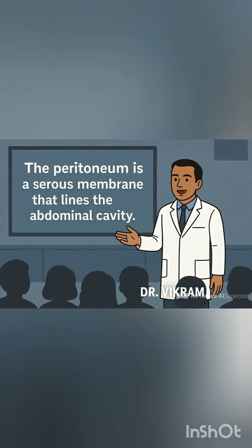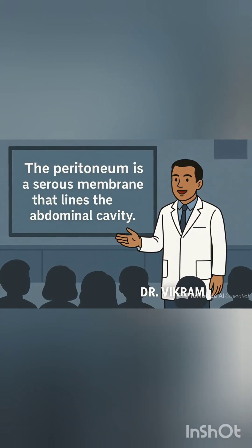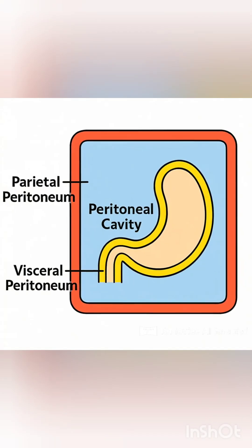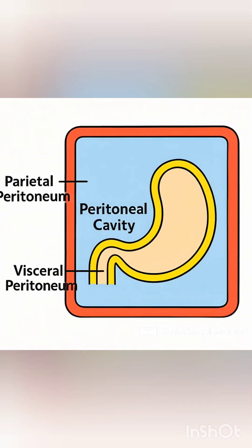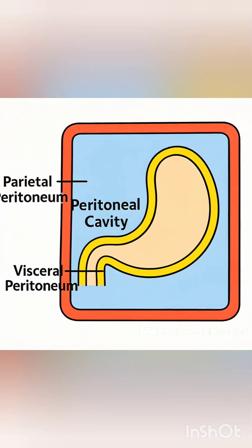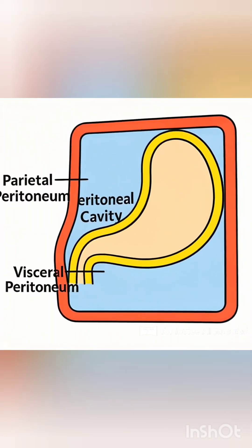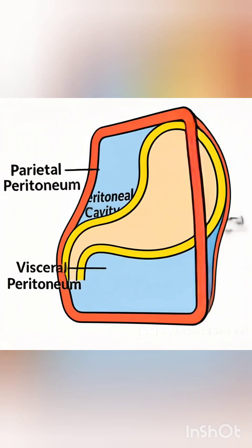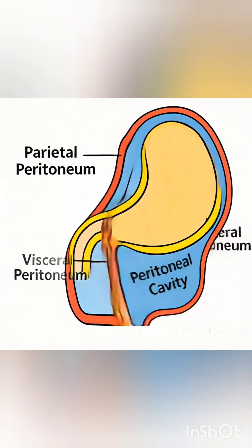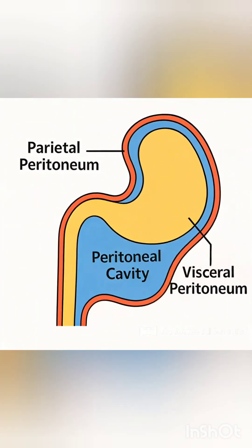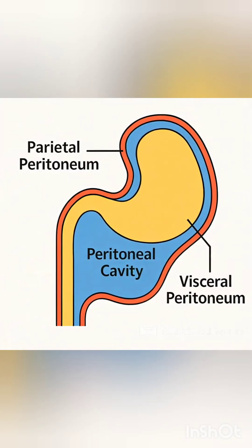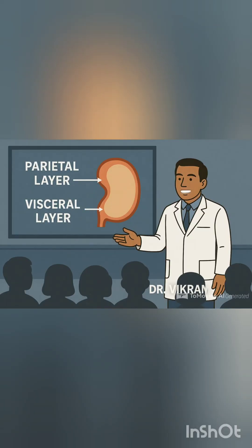Peritoneum has two layers: parietal peritoneum and visceral peritoneum. As the name indicates, parietal peritoneum lines the abdominal wall, while visceral peritoneum covers the abdominal organs.